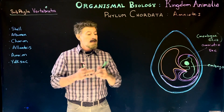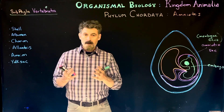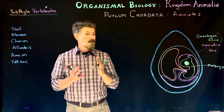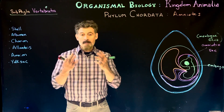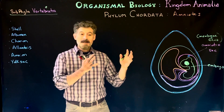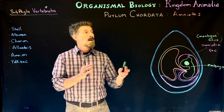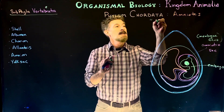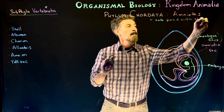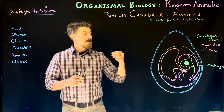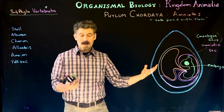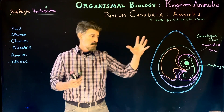Recall from the previous lecture that amphibians are required to be around water for reproduction. They have external fertilization, the embryos develop in water, they only have a jelly sac so they'd dry out if exposed to air, and the young have gills and extract oxygen from water. The amniotes are similar in that they're tetrapod vertebrates developing in fluid as an embryo, but that fluid is now contained inside an egg.